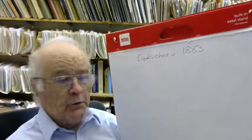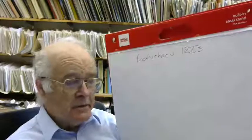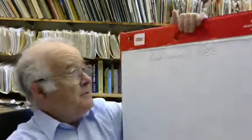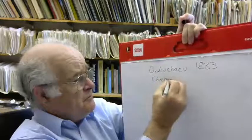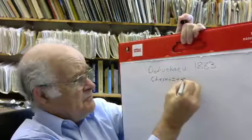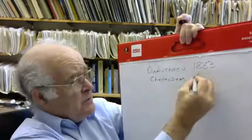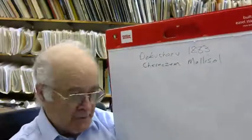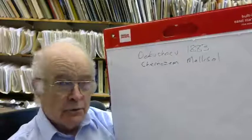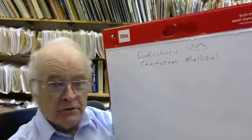What Dokuchaev proved was that there was something rather special about the soil called chernozem, the black earth of Russia which we now call a mollisol. The mollisol was not just a product of chemical geology, it was a product of life. It was created by grasslands and earthworms and marmots and ground squirrels. It was a biological product.